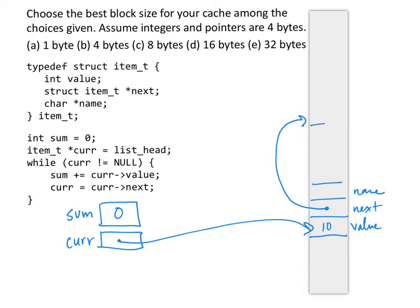The next element of the list has a similar structure. A value, maybe the value is seven, a pointer to the next element, and so forth.